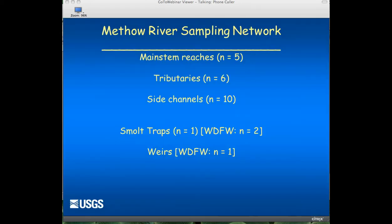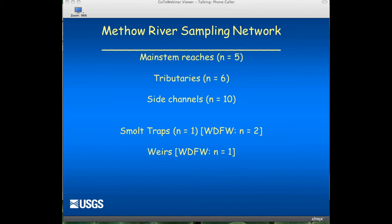In the main stem reaches we have about five interrogators present, with one or two more to be deployed. In the six smaller tributary areas of the Methow, there is at least one antenna present. We also have antennas in side channels to detect movement into those habitats. These are coupled with fyke traps and weirs run largely by the Washington Department of Fish and Wildlife, which allow us not only to detect and tag fish but to get size and weight data as well.